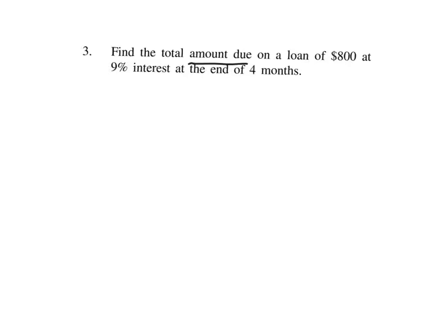What I'm doing now is not only am I going to find how much interest you've accumulated, I'm also going to add that on to what you actually owe. In this particular problem, we already know we took out a loan for $800, so we have to pay that back. On top of that $800, how much more am I paying back? We're going to call this amount due the variable A.